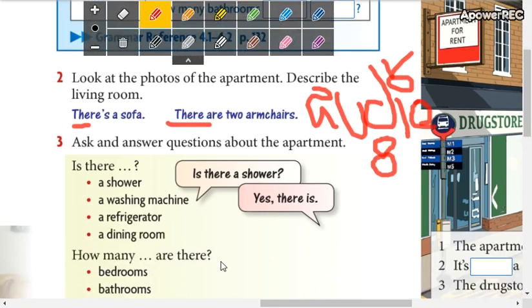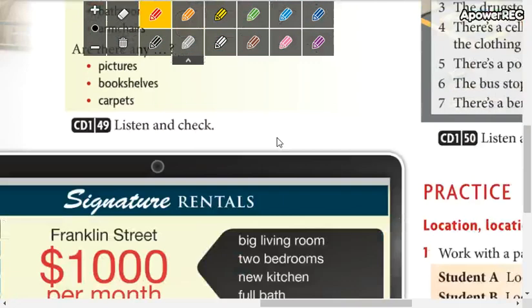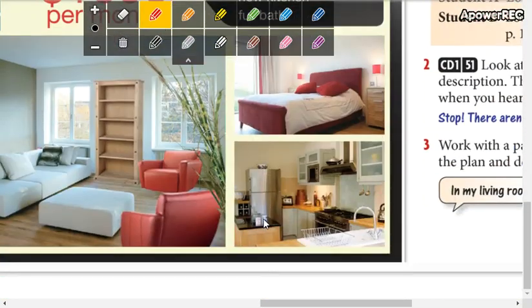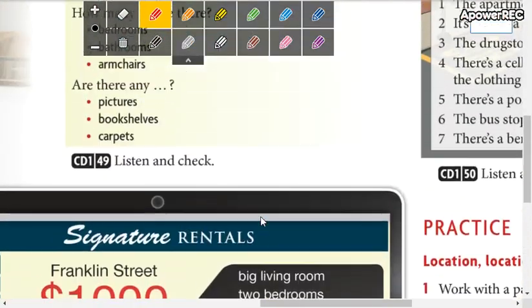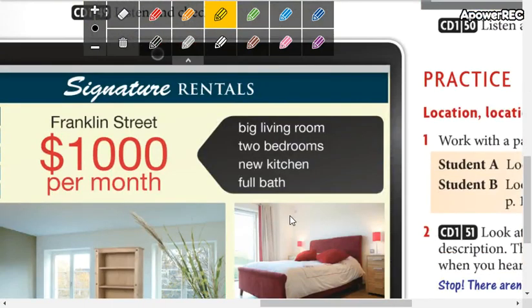Okay, now here you're going to ask and answer questions about the apartment. We continue with the same apartment. For example, a question using is there: is there a shower? So you write 'Is there a shower?' according to this.